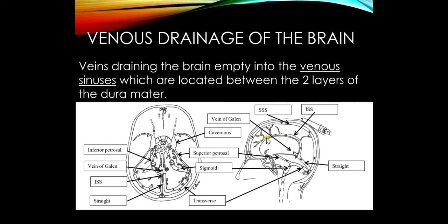The falx cerebri is a very tough dural reflection that runs in the interhemispheric fissure, very important for stabilizing the brain. There is a venous sinus located in the upper portion of the falx cerebri called the superior sagittal sinus.